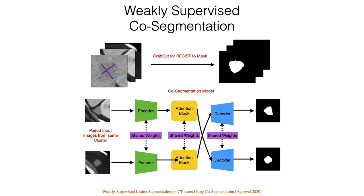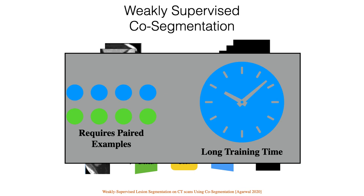One approach to obtain segmentations is to use weakly supervised learning. By refining existing bounding boxes using the GrabCut algorithm, one can obtain pseudo-ground truth. A prior work showed that it is possible to use this approach in a co-segmentation network to obtain accurate results. On the other hand, a co-segmentation approach requires generating appropriate pair samples, therefore requiring a more complex and longer training procedure.